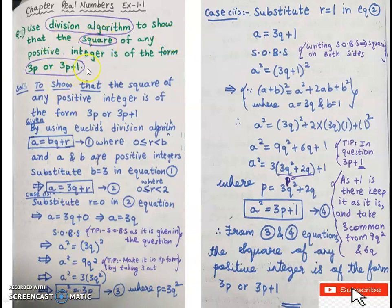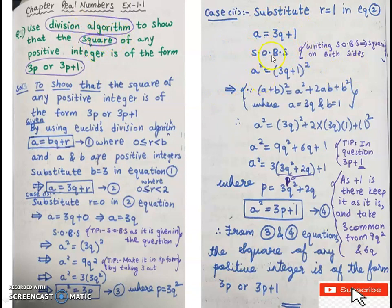For case 2 of the square problem, we need to prove a² = 3p + 1. Substitute R = 1 in the equation A = 3Q + R, giving A = 3Q + 1. Squaring both sides, a² = (3Q + 1)². This is of the form (a + b)², where a = 3Q and b = 1.